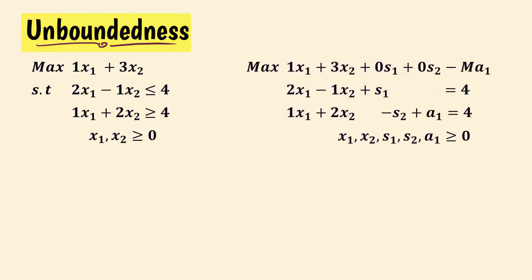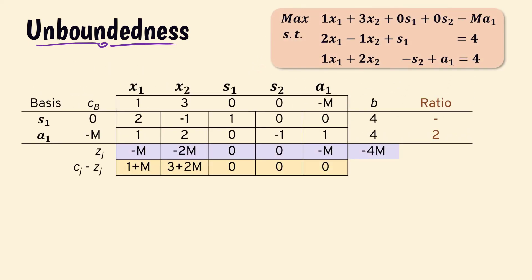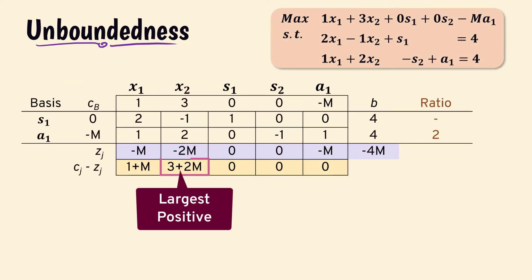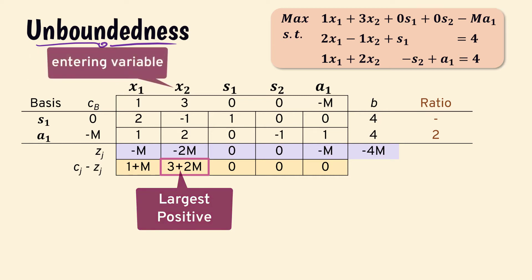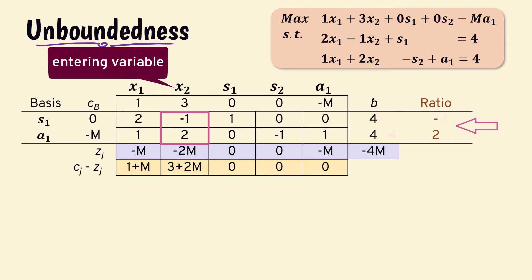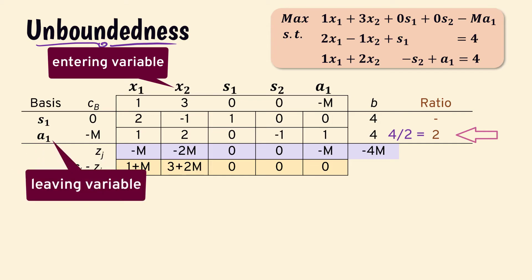Here is the problem in tableau form, and we have the initial simplex tableau. The largest net evaluation entry suggests x2 should be entering the basis. The ratio here will be negative, which is not allowed, but we have a positive ratio indicating that a1 will be leaving the basis. So 2 is the pivot element.